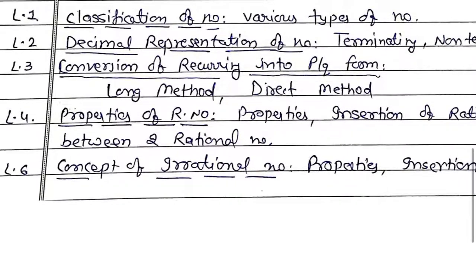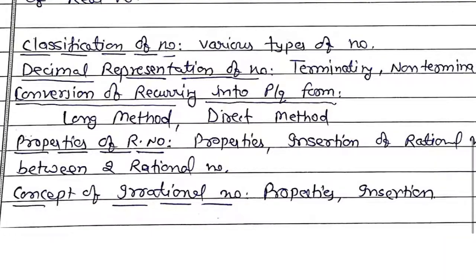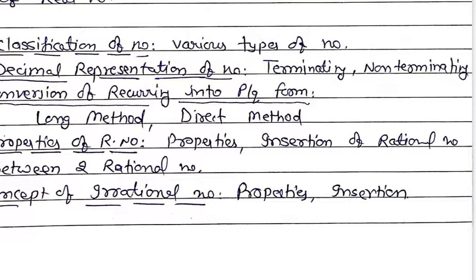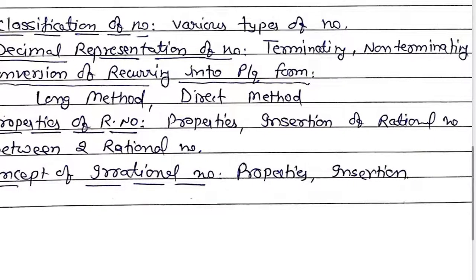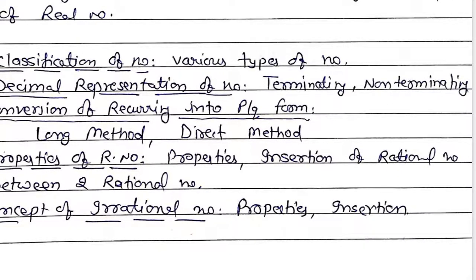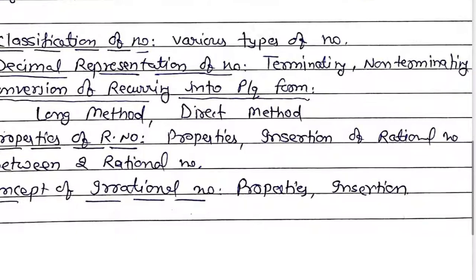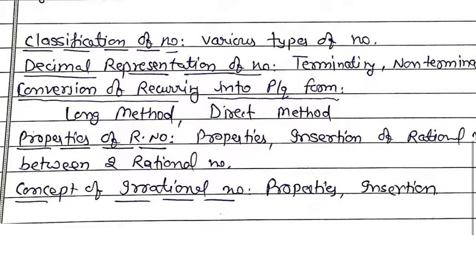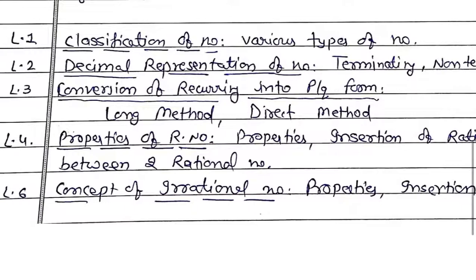Second lecture mein, maine wahan par decimal representation of numbers bataya rakha hai, jis mein terminating decimal aur non-terminating decimal ko achhe se samjhaya hua hai — flow chart ki through. Toh wahan par terminating bhi milega, non-terminating bhi milega, recurring aur non-recurring bhi mil jayega. Jab aap woh par length lenge, toh aapko 10th mein real numbers samajhne mein zyada pareshani nahi aayegi.